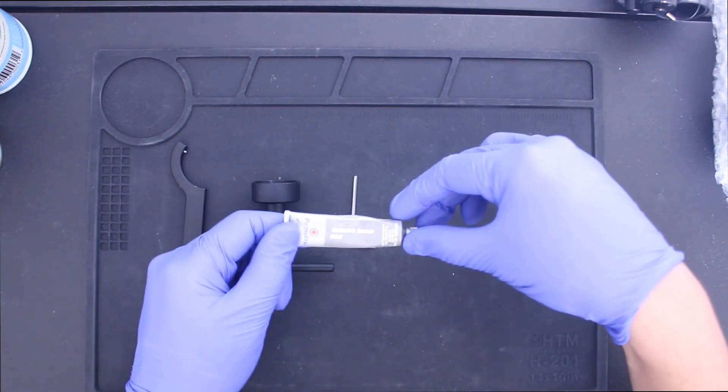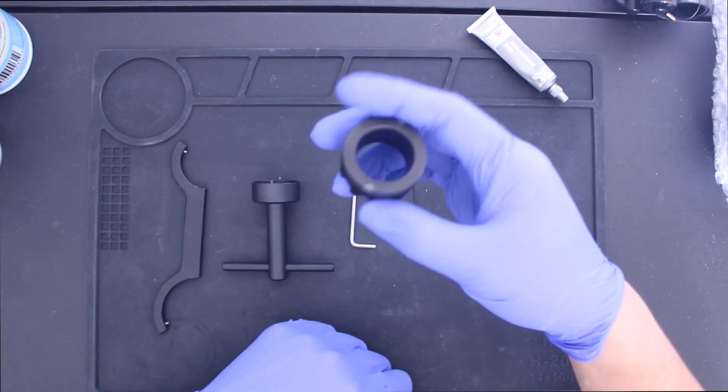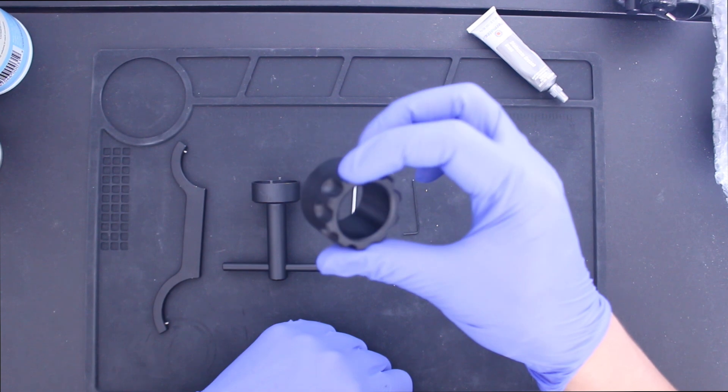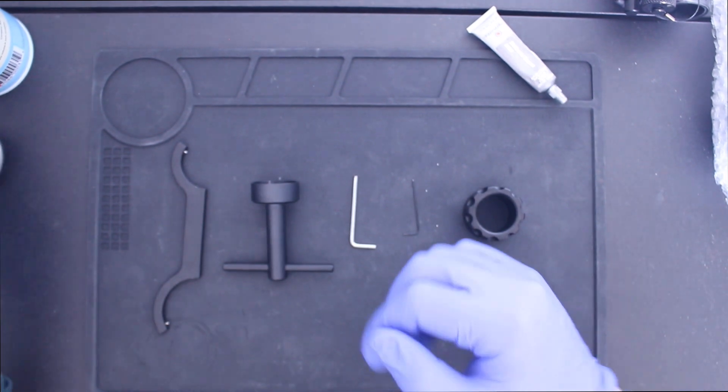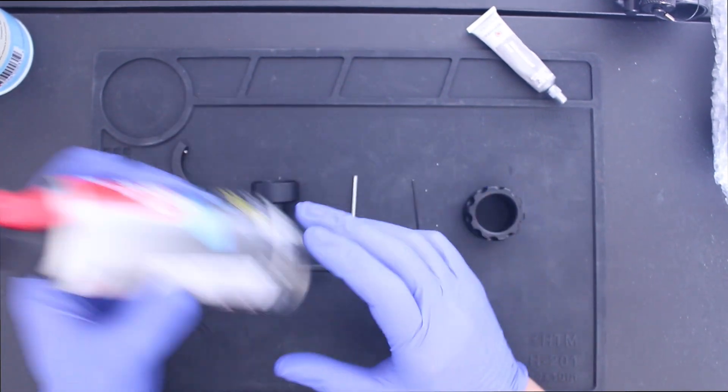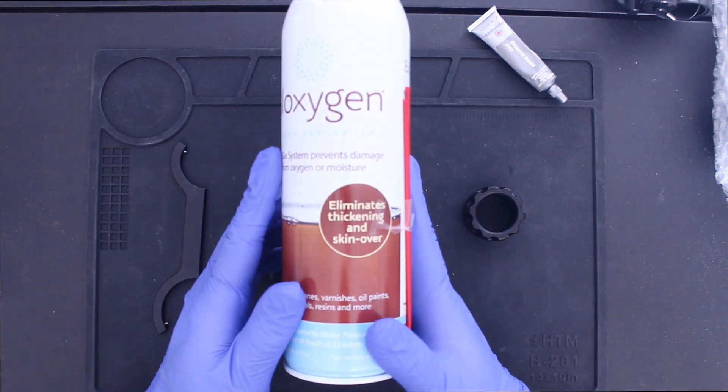You will also need some dielectric grease and a tool to screw in your intensifier to retaining ring. And you'll also need a can of air. And I have some argon here to purge my unit.